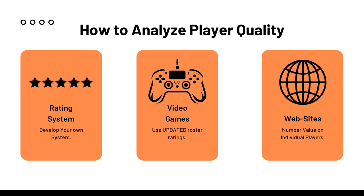Another method is video games. Always use the updated roster ratings — check out games like Madden, NBA 2K, and other games with updated rosters. Some people who don't like video games will scoff at this idea, but it's something we've used for years. EA Sports and other developers don't hire people off the street to assign numbers to players — they have years and years of data using an algorithm to give the best number to a player.